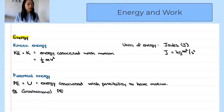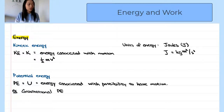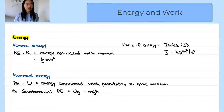Potential energy is the energy associated with the possibility to have motion. For example, the gravitational potential energy, which we denote as U sub g, is the mass times gravitational acceleration times the object's height.